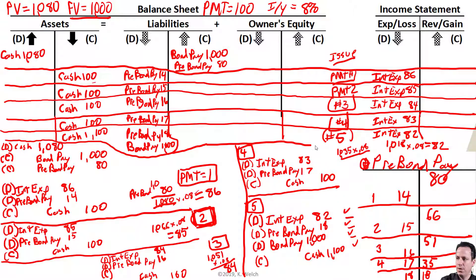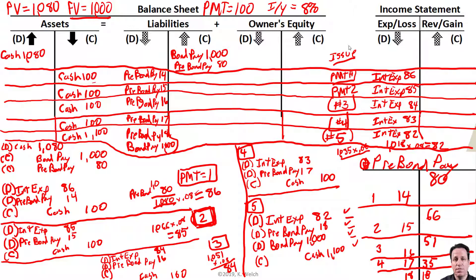That's the journal entry for period five and how it maps onto our income statement and balance sheet. That's how you calculate the journal entries and the present value of the discounted cash flows for a bond issued at a premium. Remember, the rate goes down when the bond is issued at a premium — the market rate will always be lower than the coupon rate if issued at a premium, and always higher than the coupon rate if issued at a discount. See you in the next video.